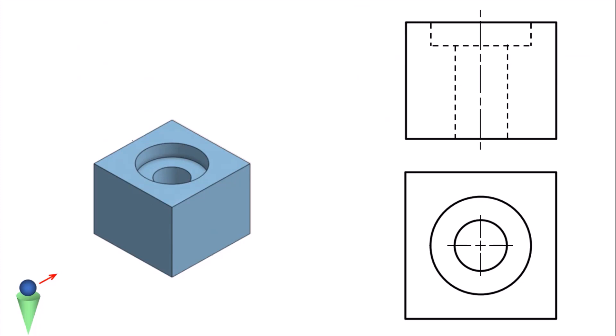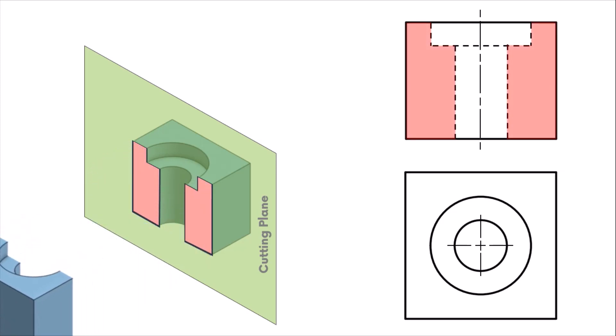To create a sectional view, first we cut the part with an imaginary plane called a cutting plane. In general, the cutting plane is passed along the parts plane of symmetry. Next, the portion of the component between the viewer and the plane is removed and the remaining part is then viewed normal to the cutting plane.